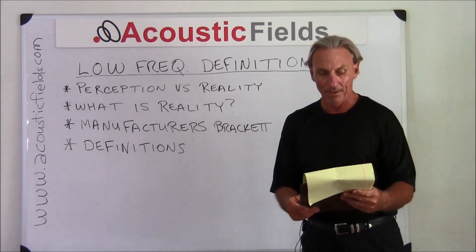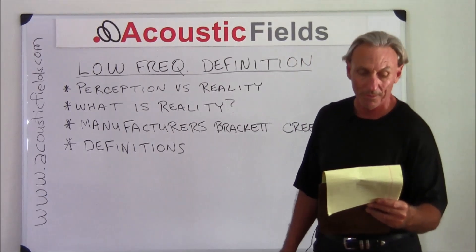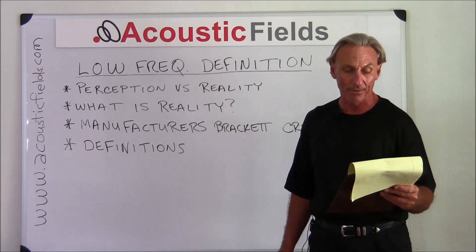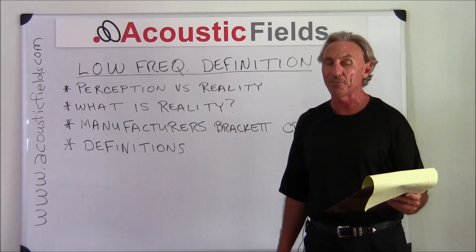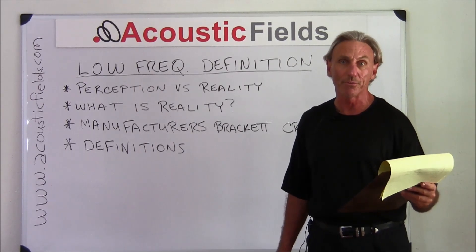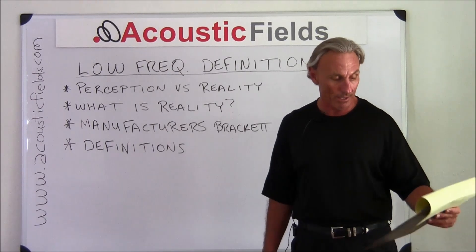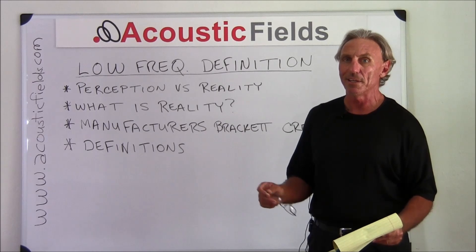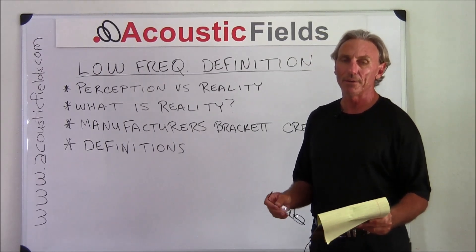We went on the internet and tried to find some definitions of low frequency, and we found a couple that were rather interesting. We found one that was from 10 cycles to 200 cycles, and one from 30 to 300 cycles. An organization called the Free Dictionary said that low frequency is anything less than 200. In the AVS forum where I posted a message asking for people's opinions, answers ranged from 19.7 cycles to 63.39 cycles. So the bottom line is there's really no agreed-upon definition, and there's a lot of variance in perception.